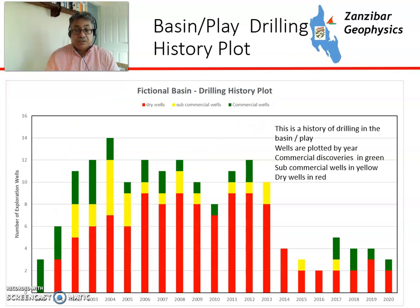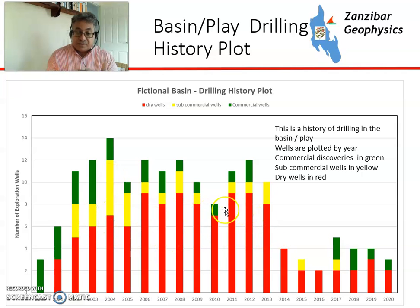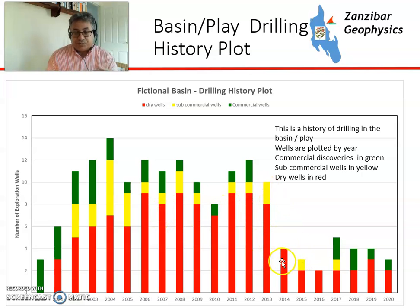Here are some further examples from a fictional basin — completely made up. This is a history plot from year 2000 to year 2020. The green are commercial wells, the yellow are sub-commercial discoveries, and the reds are dry holes. Initially we had three very successful wells — hot play, people get into it, try new things — and then later it becomes less productive. Then oil prices crash in 2014, less drilling, and maybe a new play is getting developed.